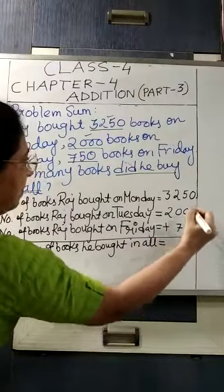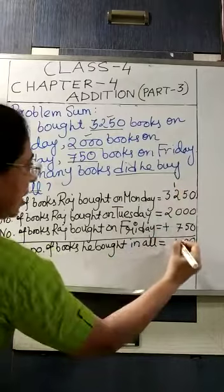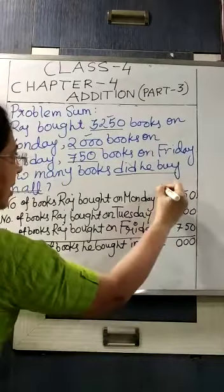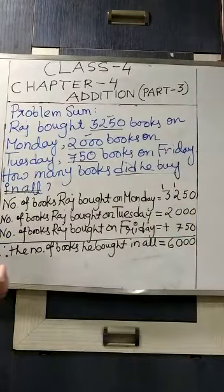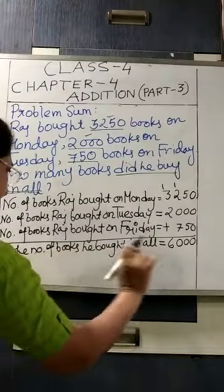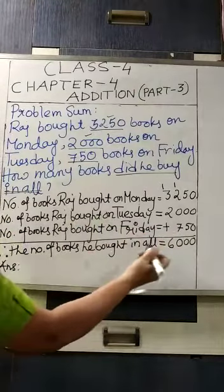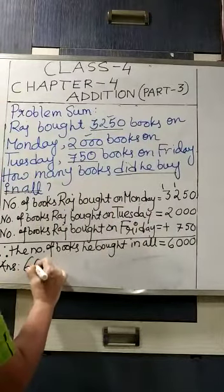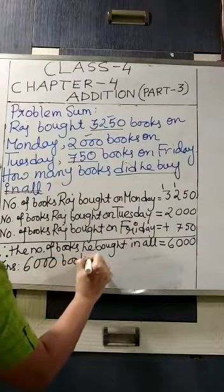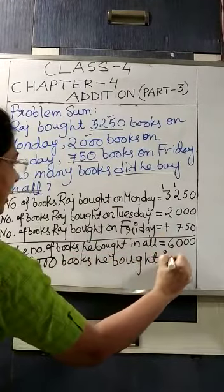You have to do the addition: 0, 5 plus 5 is 10, write 0 carry 1. 7 plus 2 is 9, plus 1 is 10, write 0 carry 1. 3 plus 2 is 5, plus 1 is 6. Then you write the answer separately in the therefore line: the number of books he bought in all is 6000. Or you can write: he bought 6000 books in all.